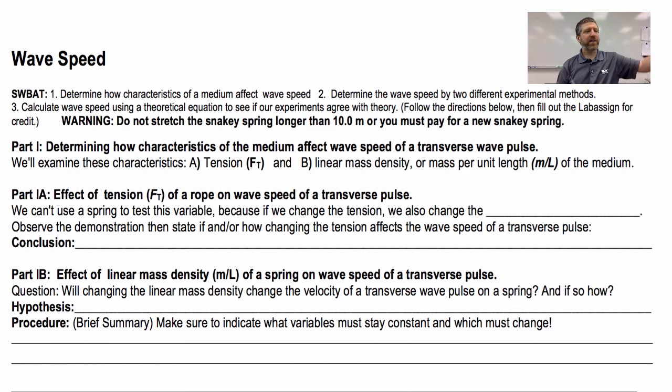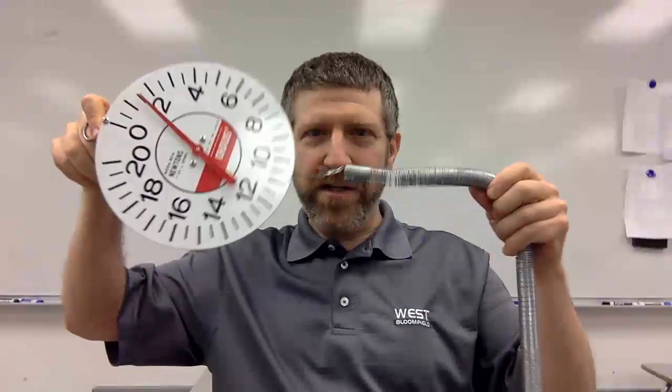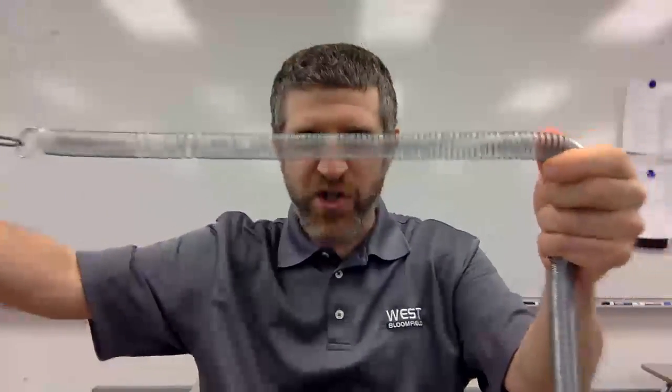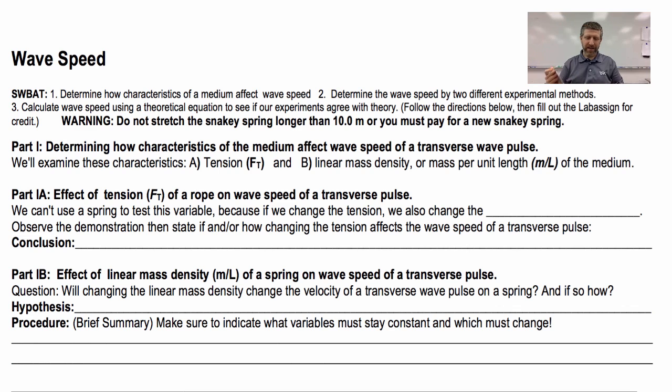Now, the first thing we want to do is measure the effect of tension on wave speed of a transverse pulse. The thing is, we can't use a spring to test this variable. Because if we change the tension, I'm unintentionally changing another variable, right? I'm going to increase the spring tension. What am I changing besides the tension in the spring? I'm changing the linear mass density of the spring. So that is why I need to use something that won't change its linear mass density with different tensions. And just so happens, I've got a rope right here.